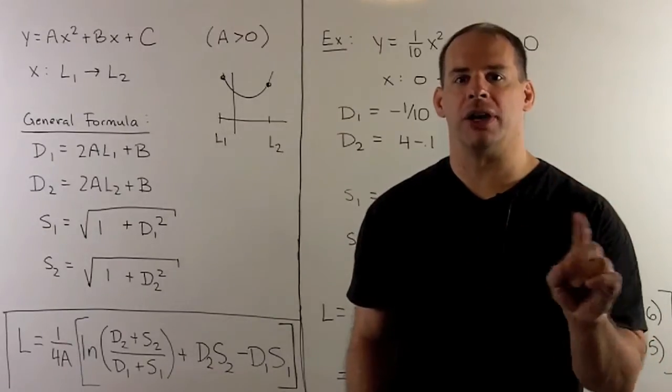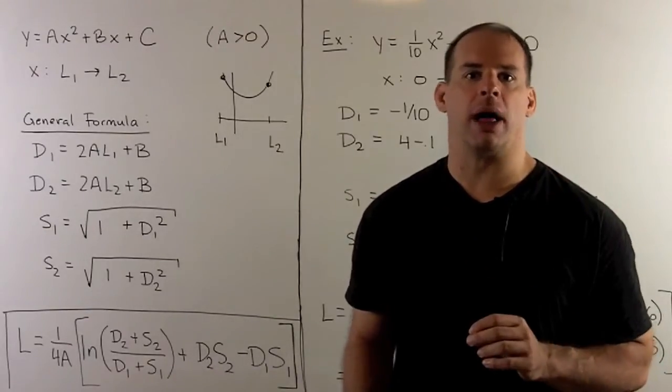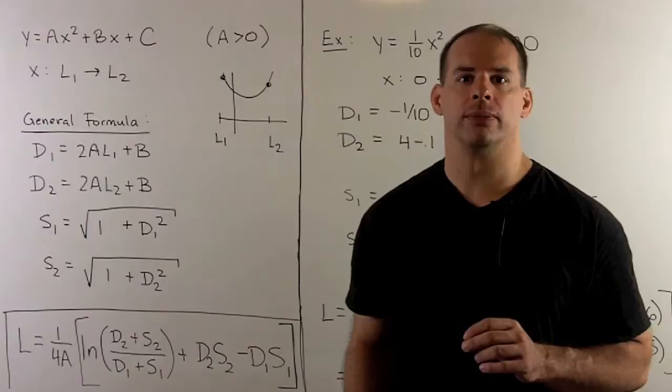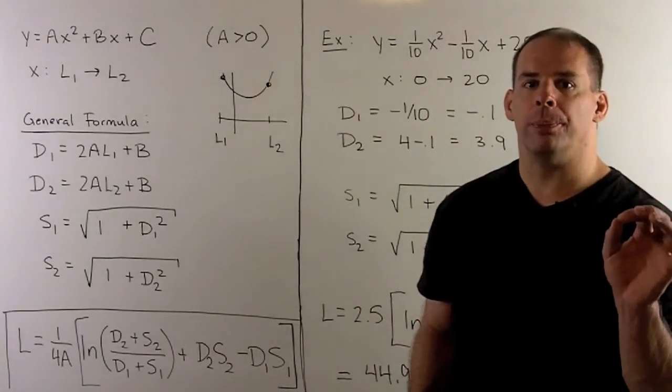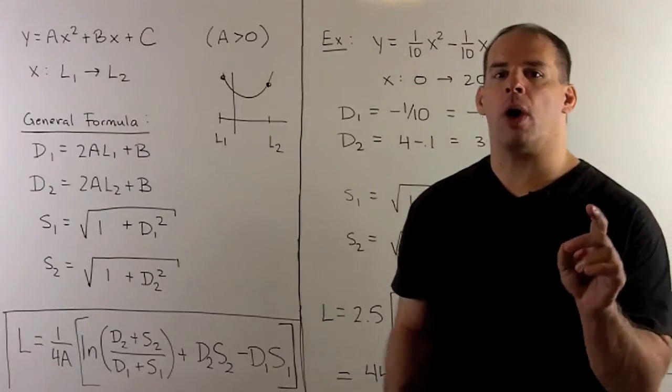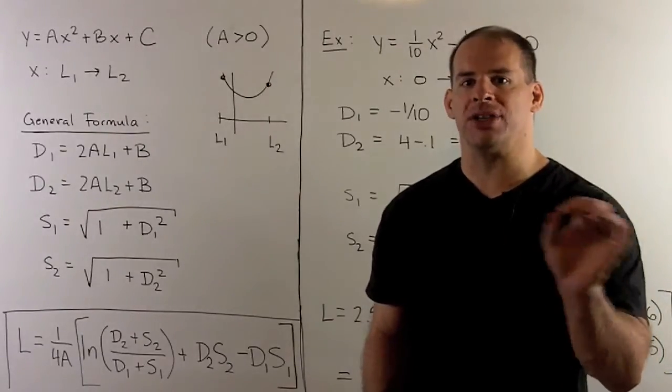Then, I'll give an alternate derivation of the formula that doesn't use hyperbolic trig functions. Now, statement of the formula. What we need to do, we have to compute four quantities, and then we put these four quantities into our formula.